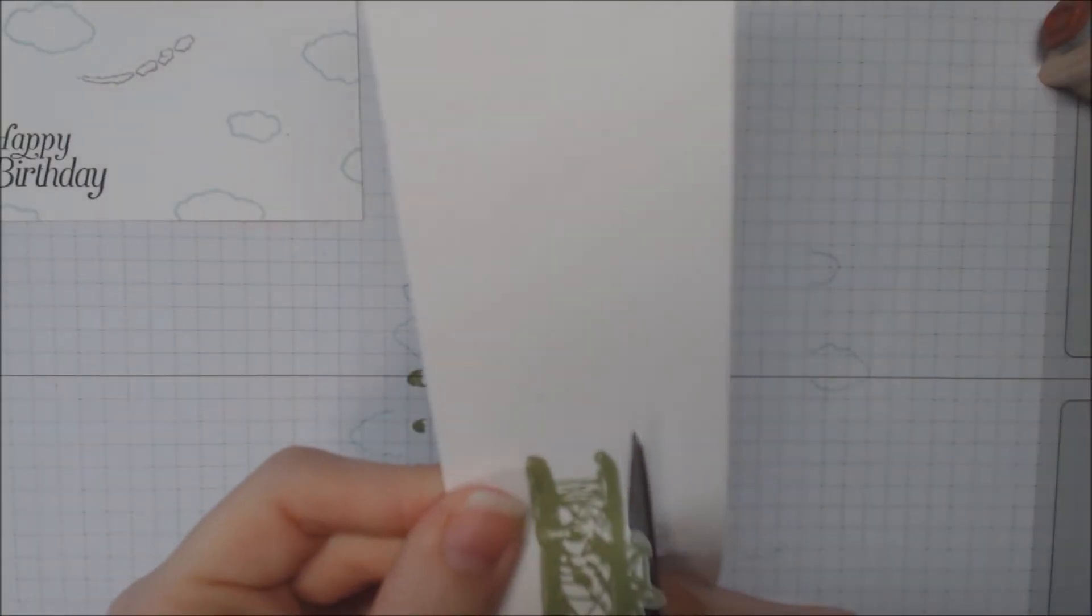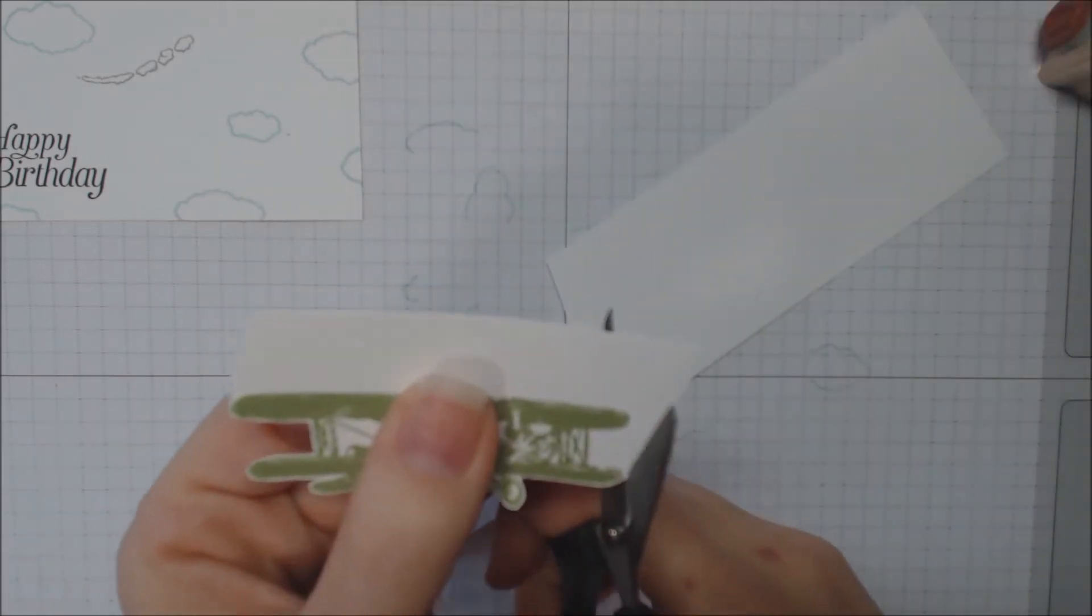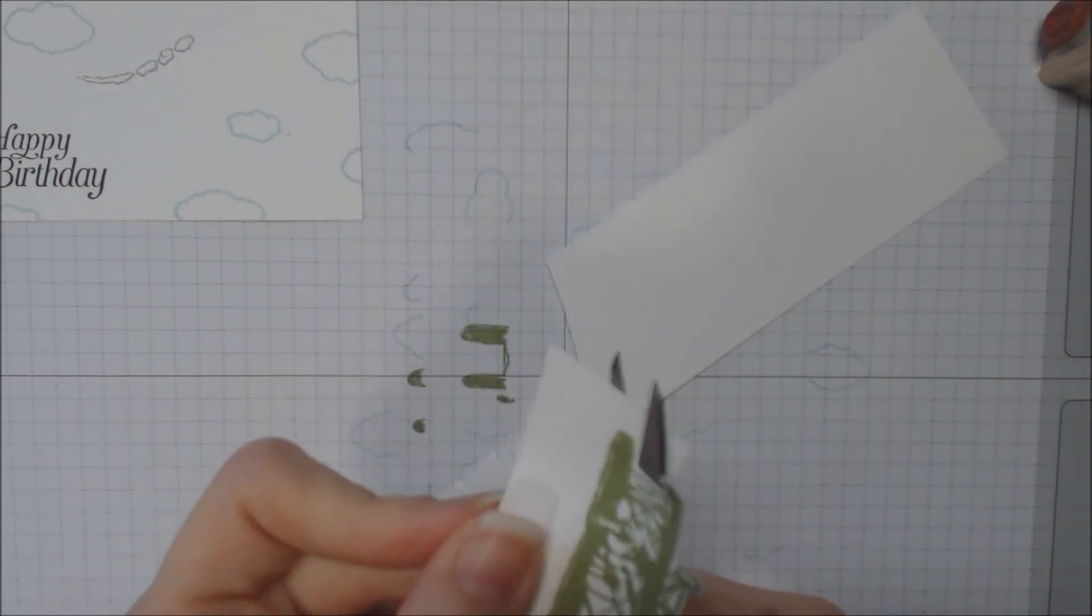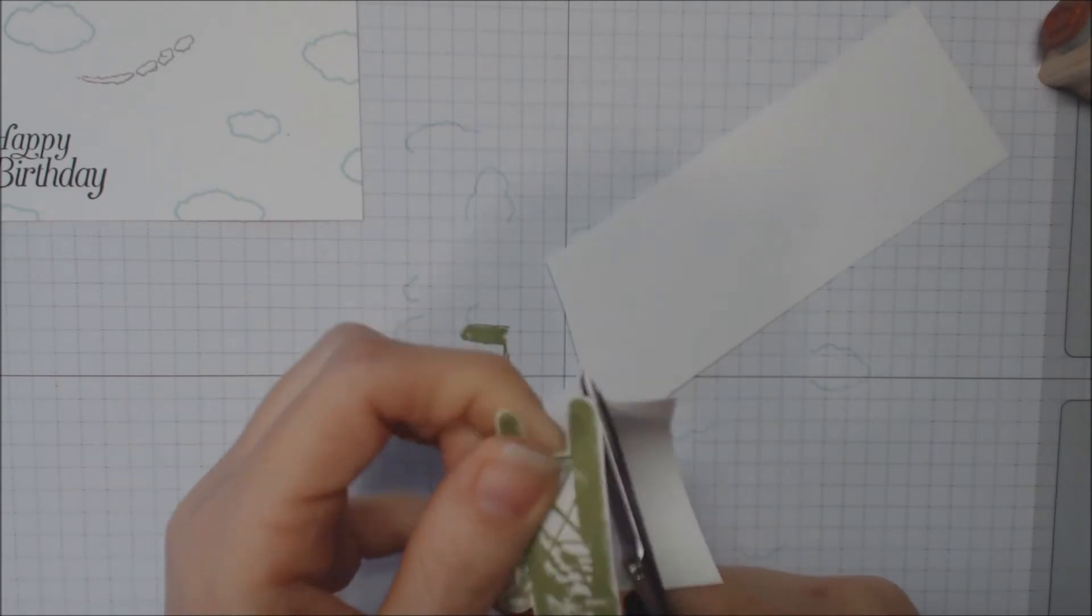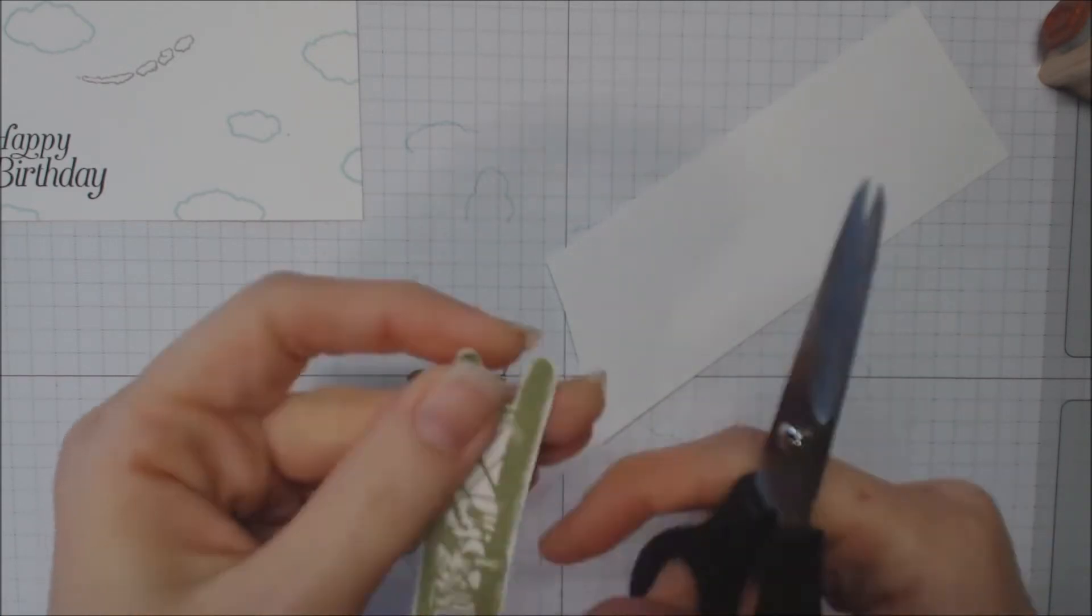And we'll get this cut out and we're going to pop it up. And when you're done cutting it out you can go ahead and look. If you have any rough edges you can kind of soften that up with your scissors.